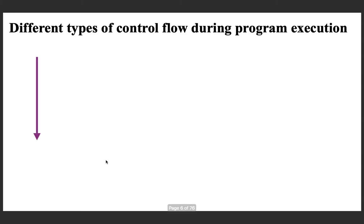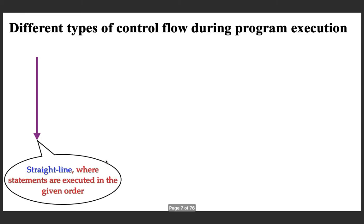We are going to look at it in a general way. The first type of control flow is straight line — it starts with the first statement, then executes the second, then the third, and progresses like this. This is called straight-line execution where statements are executed in the given order, meaning after executing the i-th statement the next statement to be executed is always the i+1 statement.